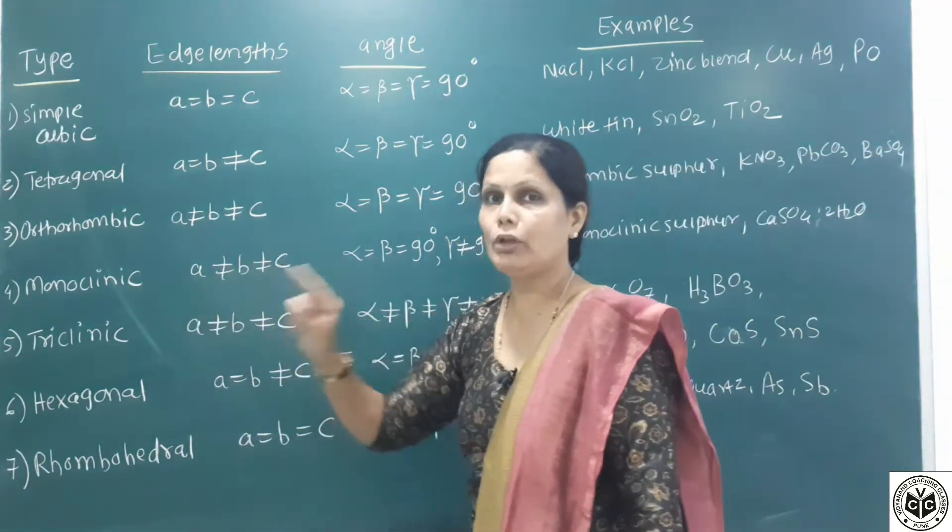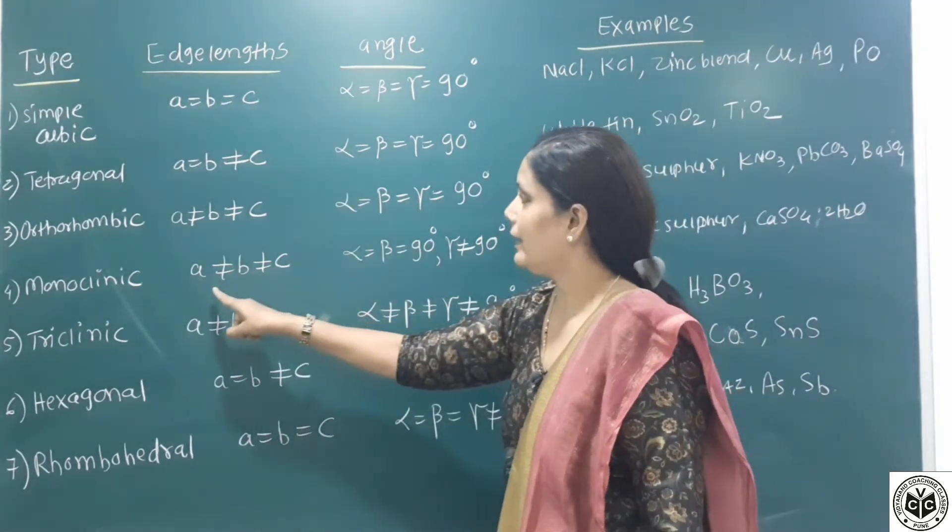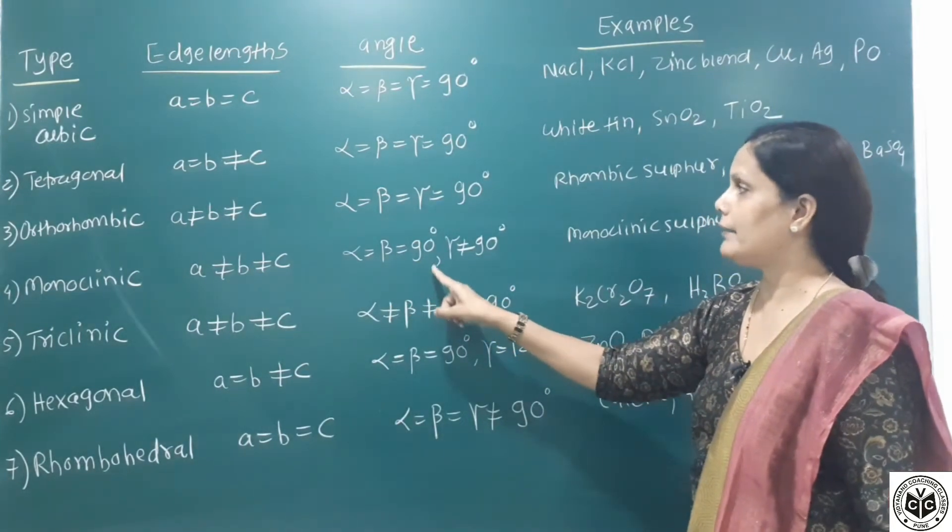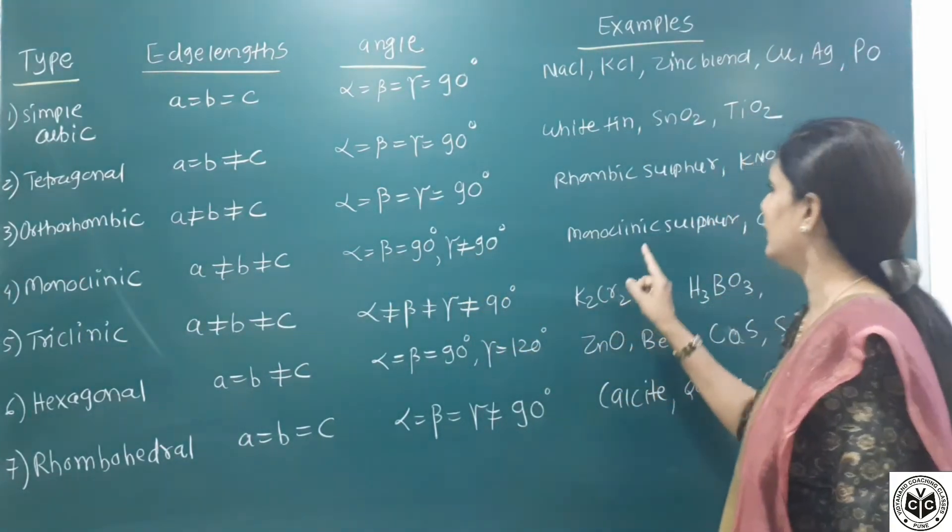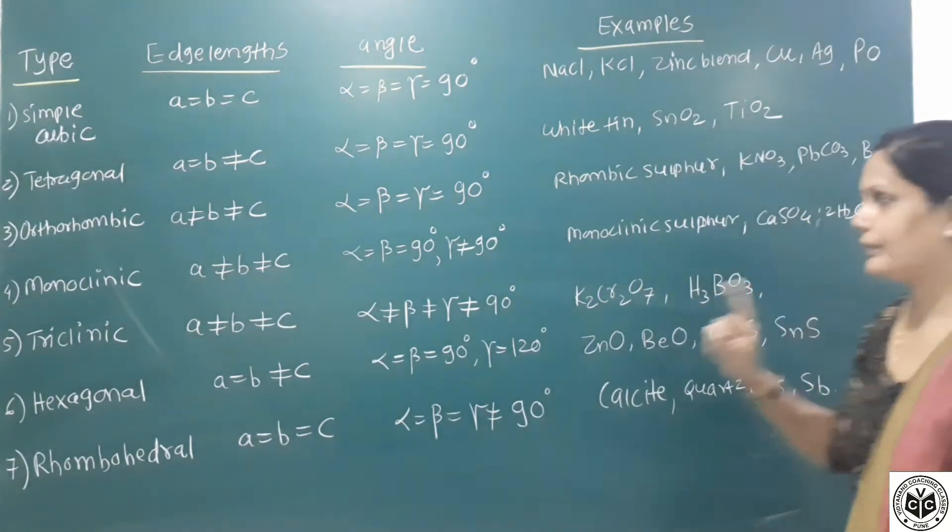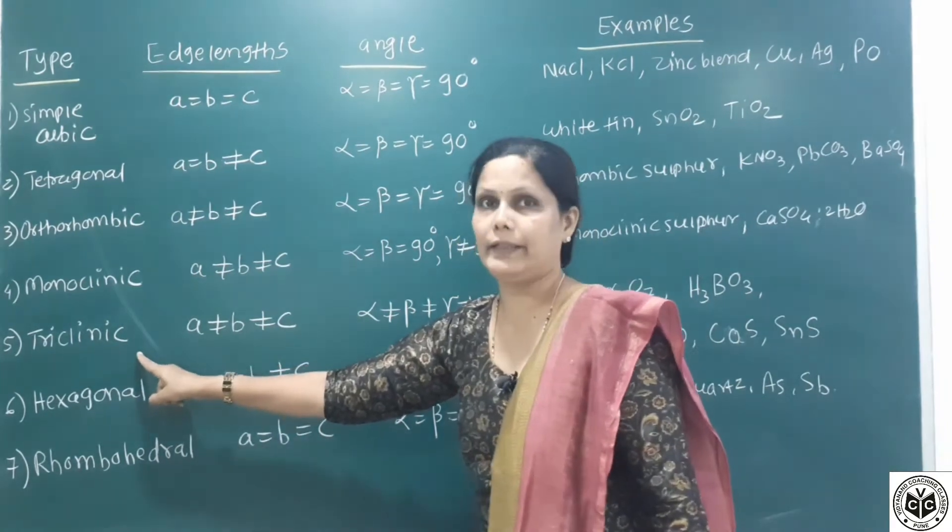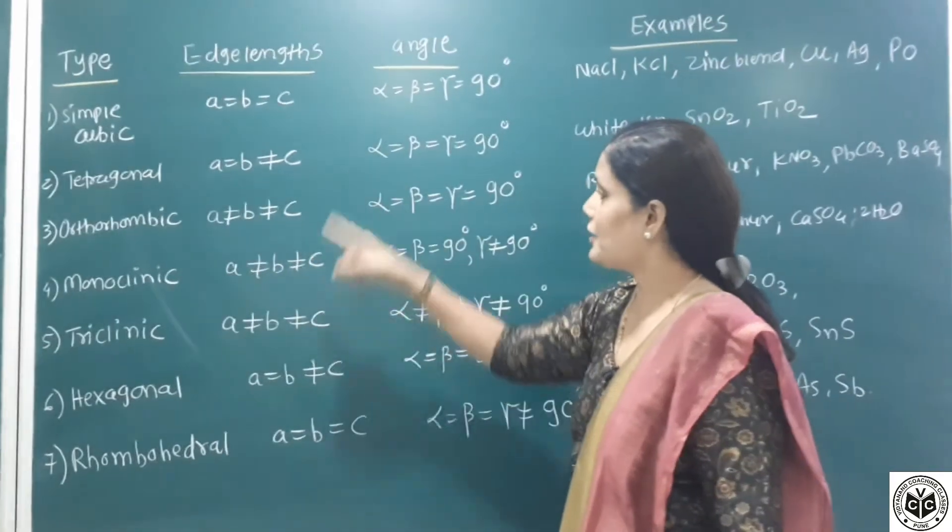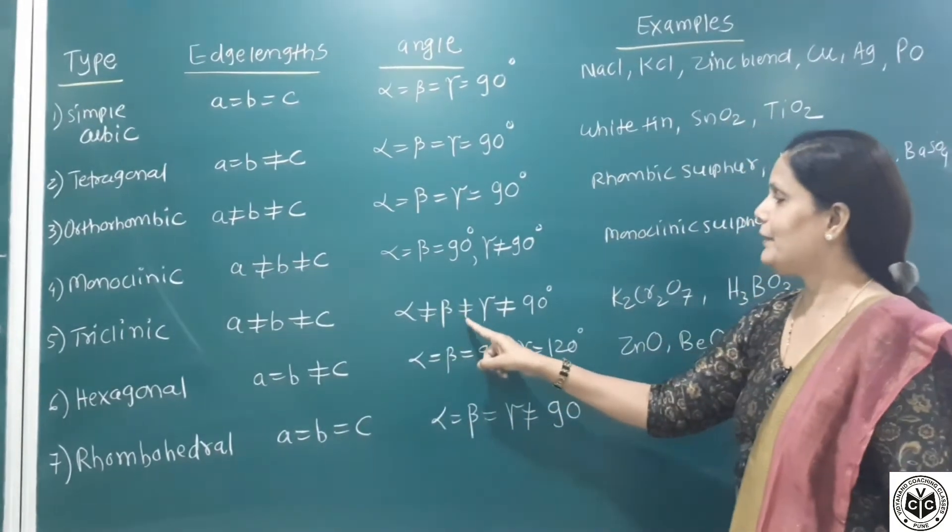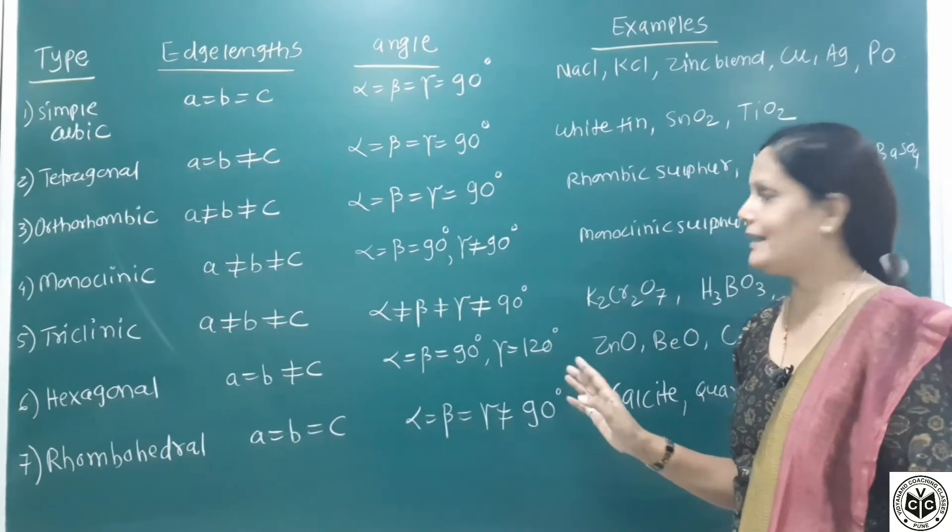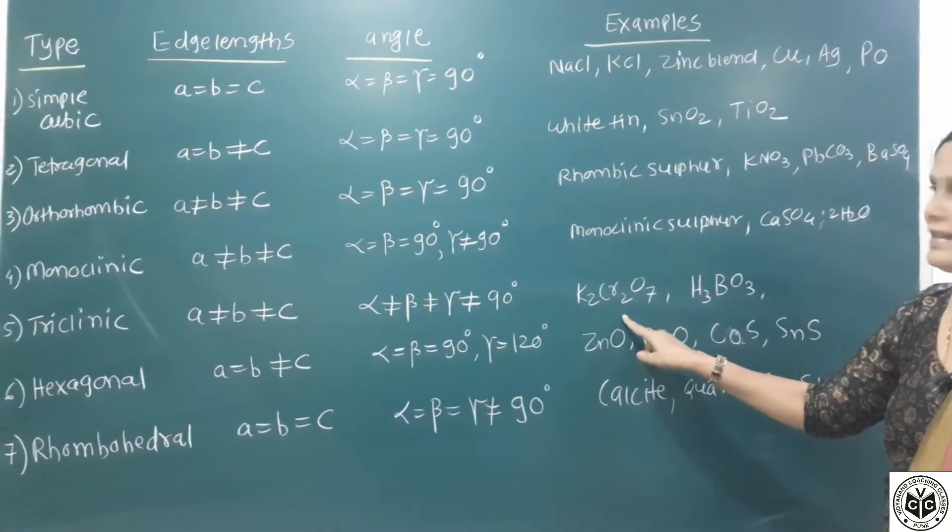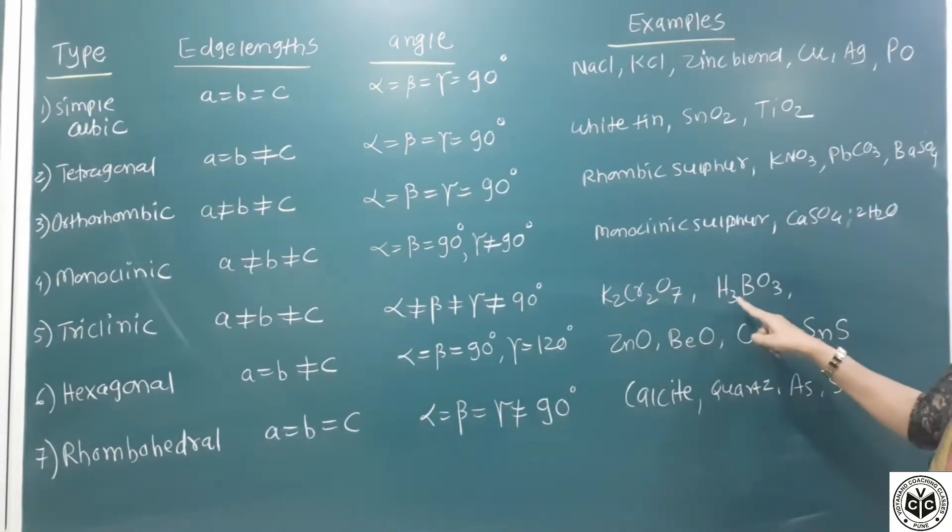Fourth type is monoclinic. Edge length A is not equal to B not equal to C. Angle alpha equals beta equals 90 but gamma is not equal to 90. Examples are monoclinic sulfur and CaSO4·2H2O. Fifth type is triclinic lattice. A is not equal to B not equal to C. Alpha is not equal to beta not equal to gamma which is not equal to 90 degrees. Examples are potassium dichromate K2Cr2O7 and H3BO3.